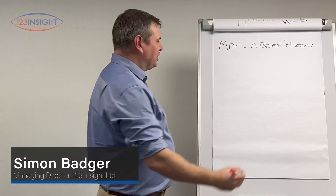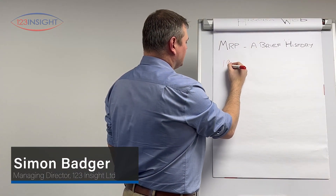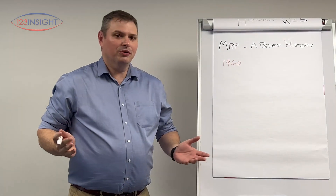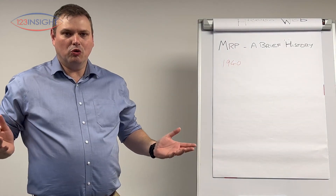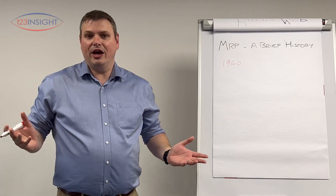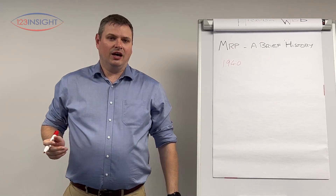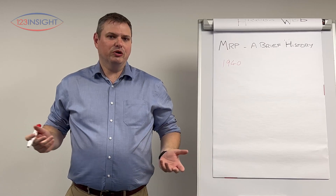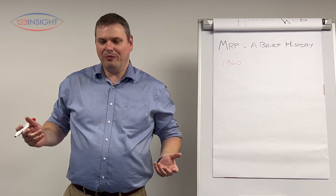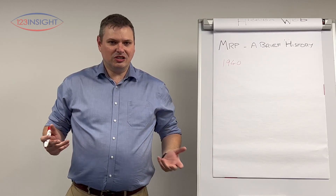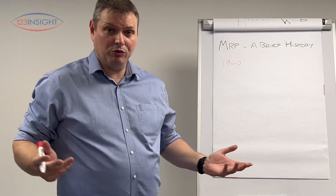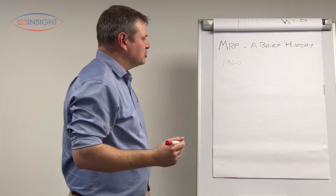We're going to start our journey in the 1940s. With the gear-up and running of World War II, mass production — particularly of armaments and aircraft — became a big issue. Big companies were using bills of material in earnest for the first time, and some companies were starting to computerise their bills of material on large mainframe-type computers.